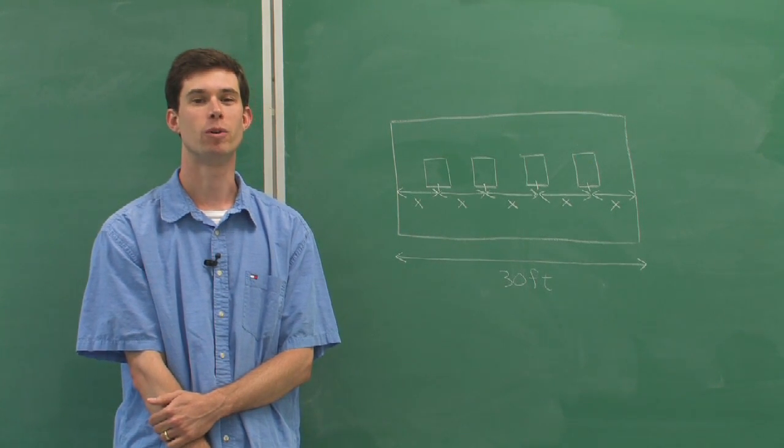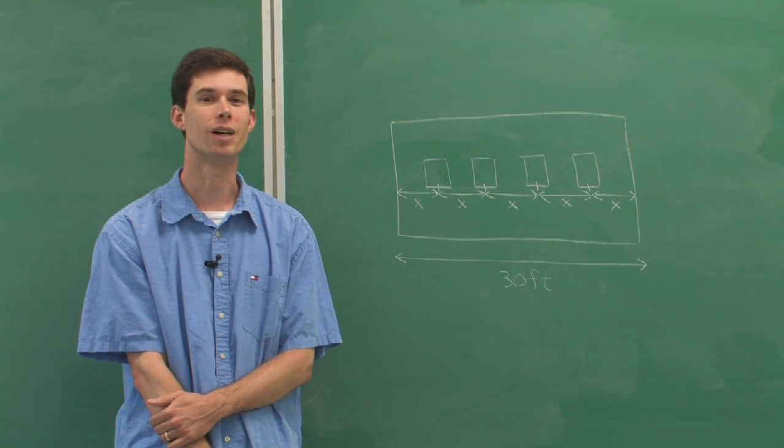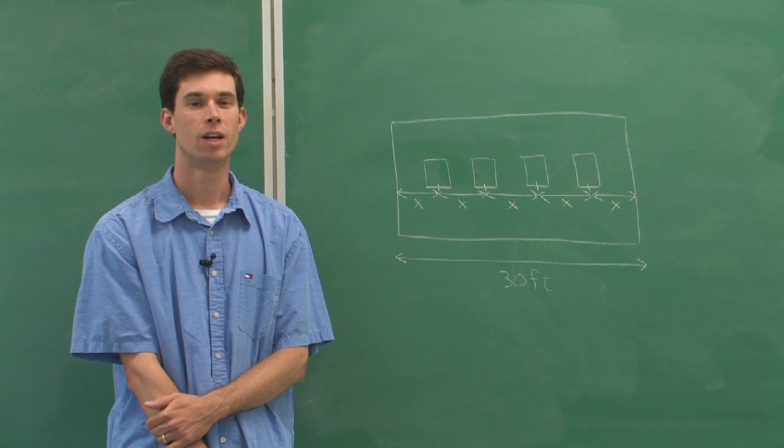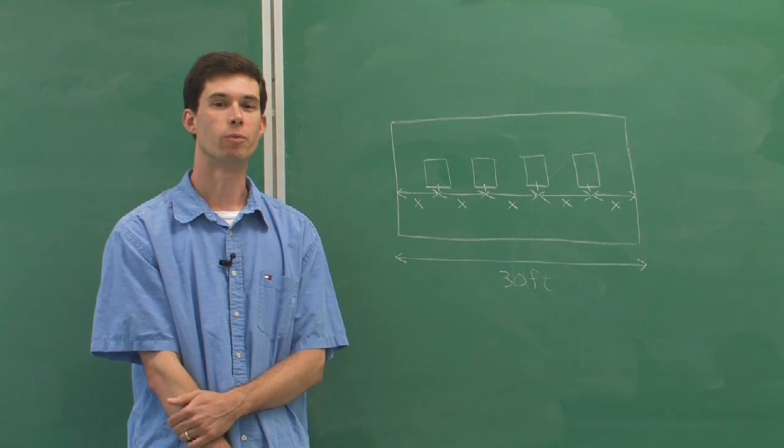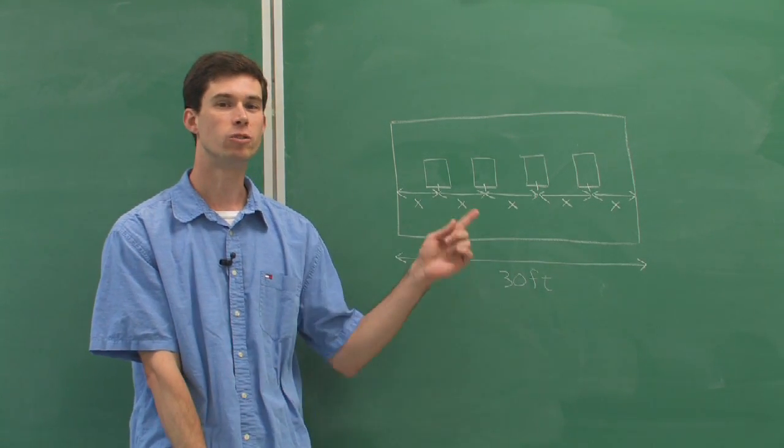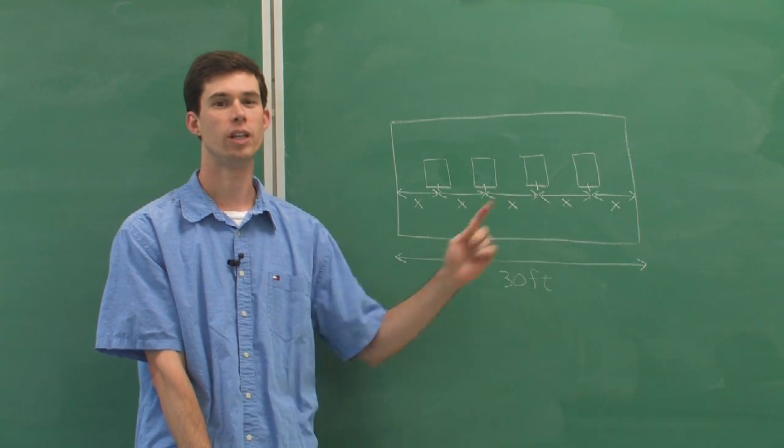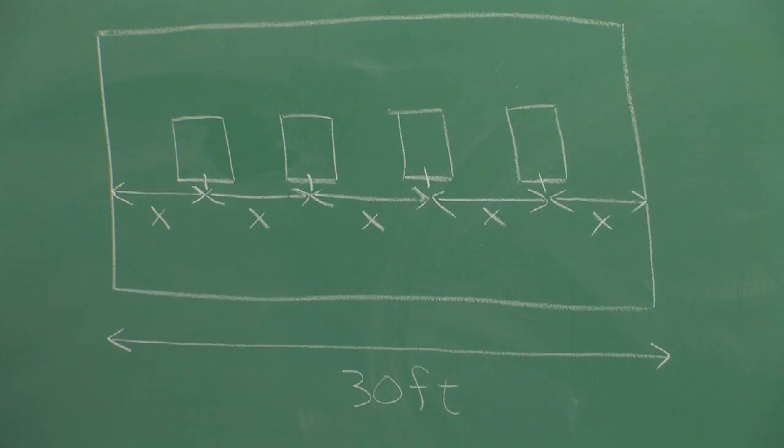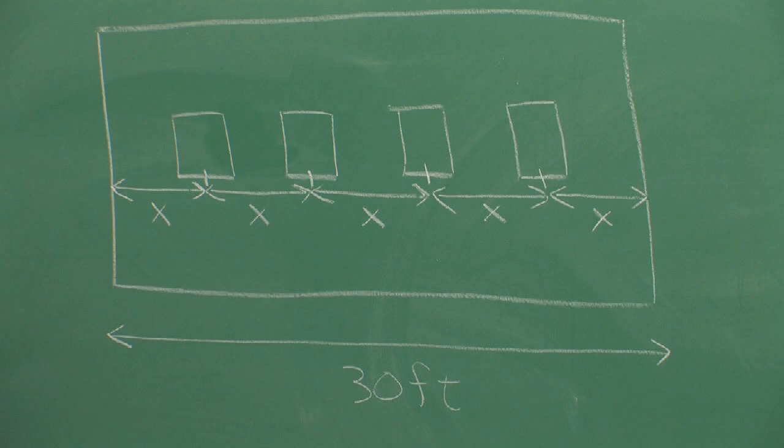Hi, I'd like to give you a quick example of how mathematics might come into play in carpentry. So suppose that we have a wall that we're building and we need to space four windows equally across that wall. Let's say that our wall is 30 feet wide.